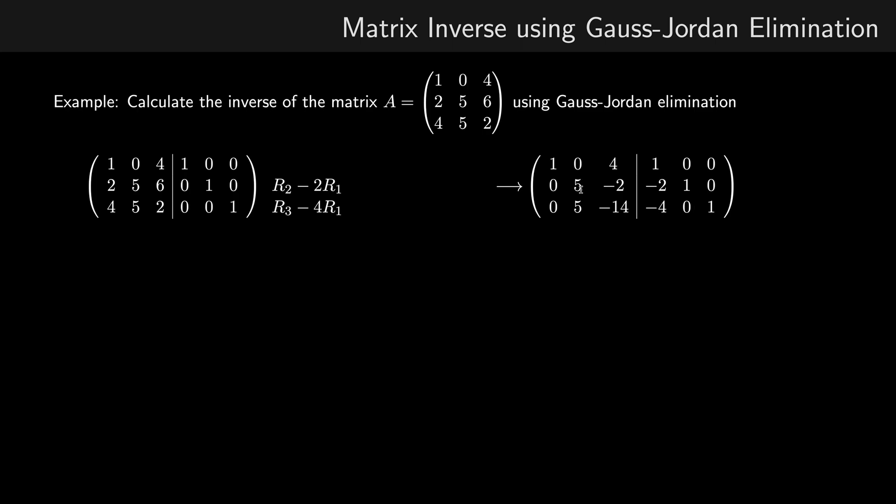Next we have our pivot of 5. What I'm going to do is multiply throughout row 2 by 1/5. Now our pivot is 1, so we're going to subtract 5 lots of row 2 from row 3. Notice our values on the right-hand side are changing as we change the values on the left-hand side.